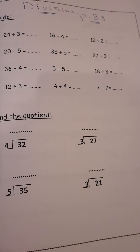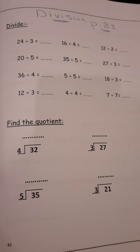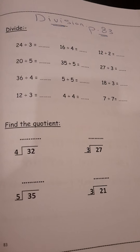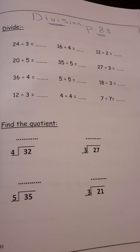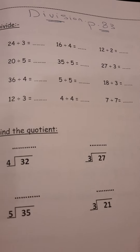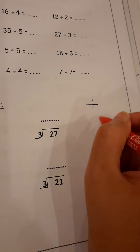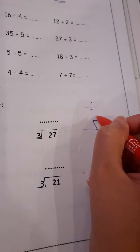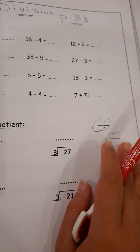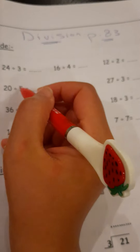Before answering questions about division, you must study hard the multiplication tables — tables two, three, four, and five from your booklet. Now we will start to answer questions about division. The sign of division: we have two signs. In the first sign we write the answer here, and in the second sign we write the answer after the equal sign.